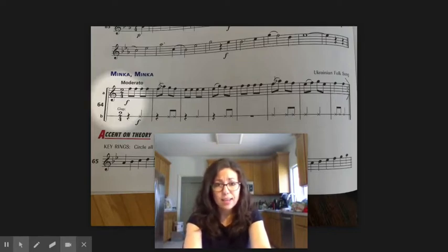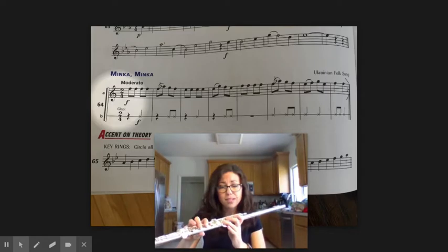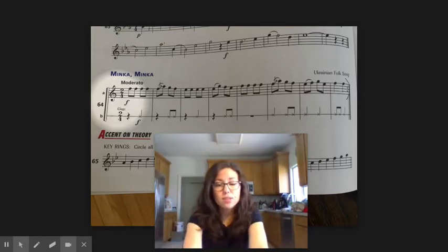And clarinets, you have F natural. Trumpets, you have F-sharp. Saxophones, you have C-sharp. If you don't remember these notes, go back and review them.